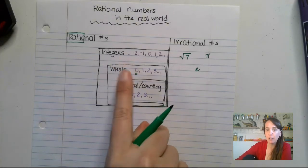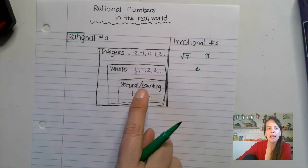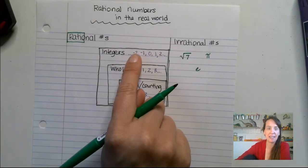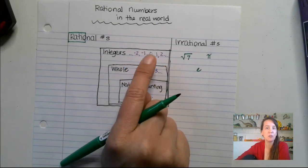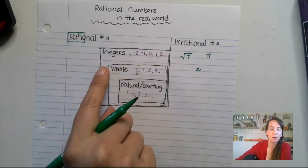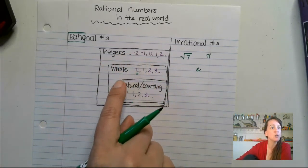Integers include that whole number, that zero, that includes counting numbers, but it also includes their opposites. And what I mean by that is the opposite of 2 is negative 2, the opposite of 1 is negative 1. So it goes in both directions. Those are all of our integers, whole numbers, natural numbers.